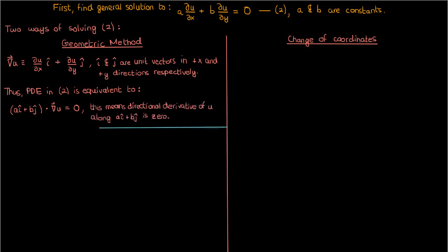Just to refresh your memory: by directional derivative, I mean how quickly a function u changes along a particular direction. For example, if I wanted to know how quickly u changes along the positive x direction, I would take the dot product of 1i plus 0j with the gradient of u, and this would give me the partial of u with respect to x — consistent with the definition of partial u partial x, how quickly u changes when you move along the x direction with y held constant.